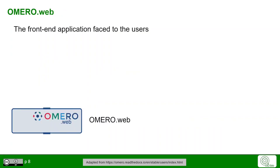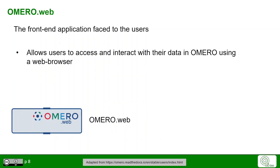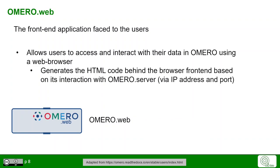OMERO Web is the frontend application faced to the users. It allows users to access and interact with their data in OMERO using a web browser. For this, it generates the HTML code behind the browser frontend, based on its interaction with OMERO Server.